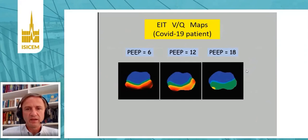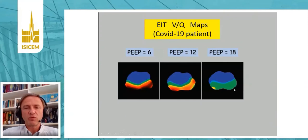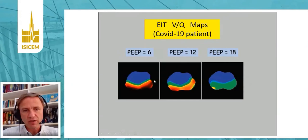In another example, this patient also had lots of shunt at low PIP levels, which improved a lot, resulting in much better oxygenation when we increased PIP. Interestingly, dead space did not increase much as we raised PIP. So for this particular patient, high PIP was beneficial — but this is not always the case.